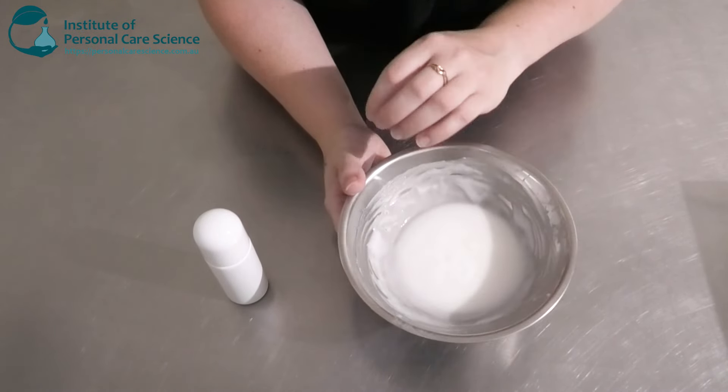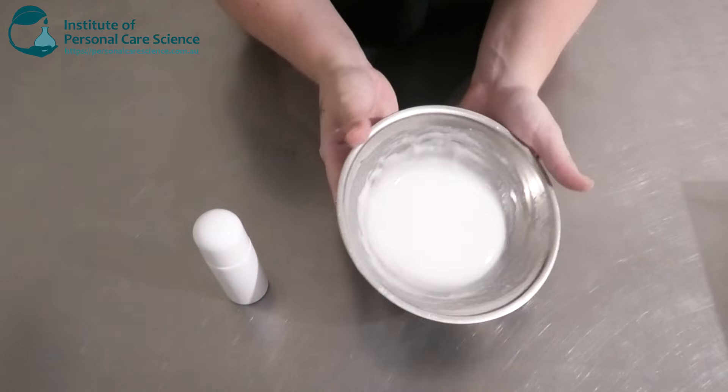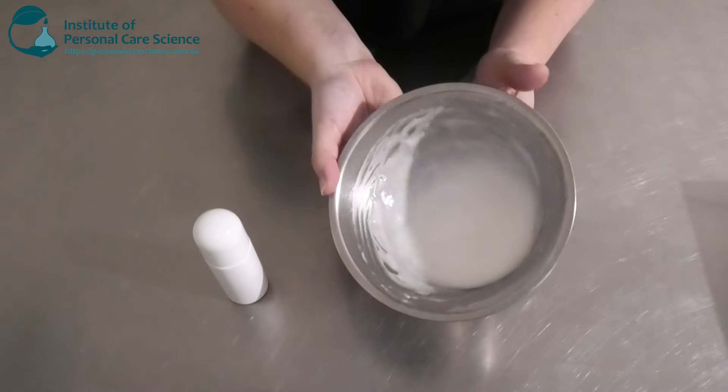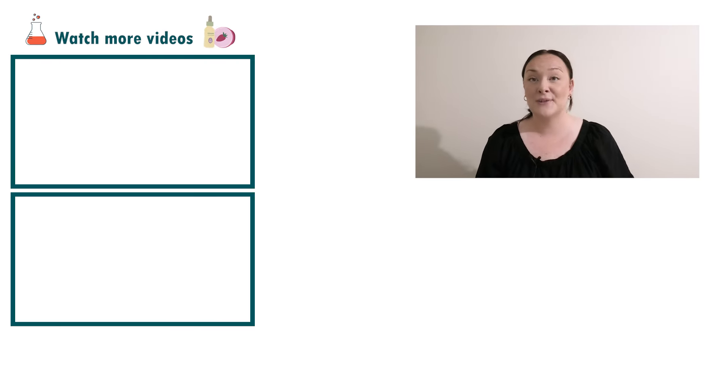But it'll be very obvious if it becomes unstable. As always, let it sit and look for any signs of instability. But this is looking gorgeous, glossy, and perfect viscosity. Well, there you go. That's how super easy it is to make a mandelic acid deodorant that's perfect for brightening those dark underarms.